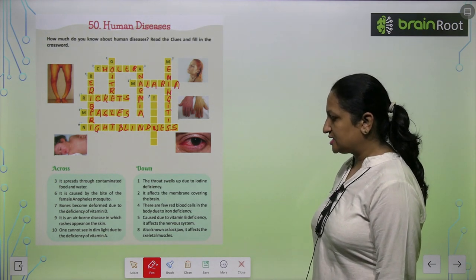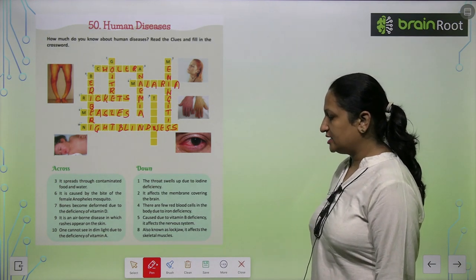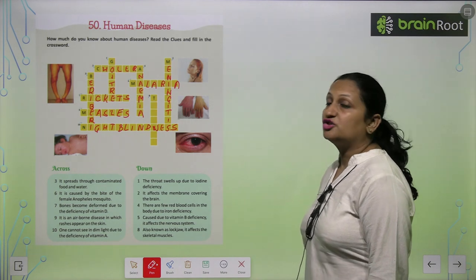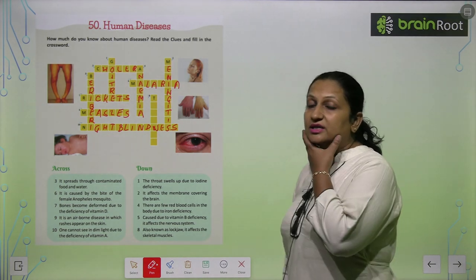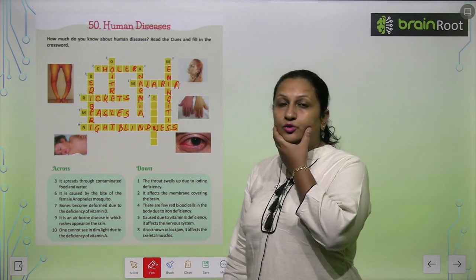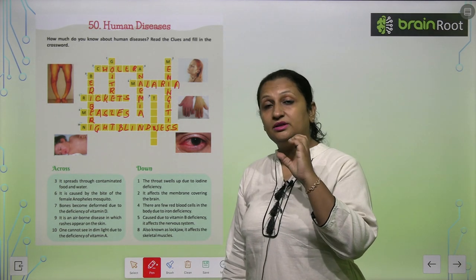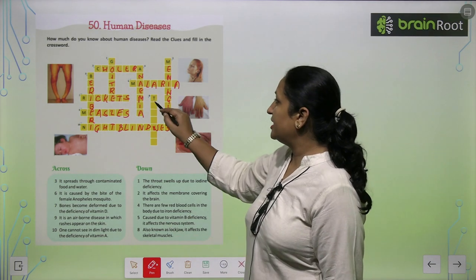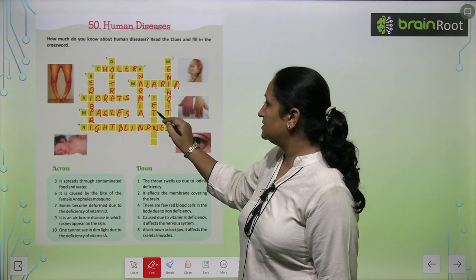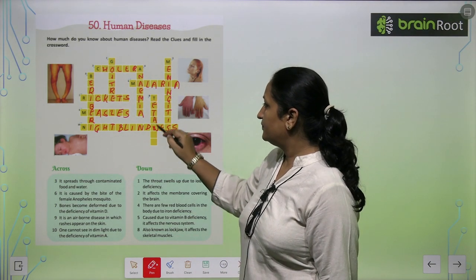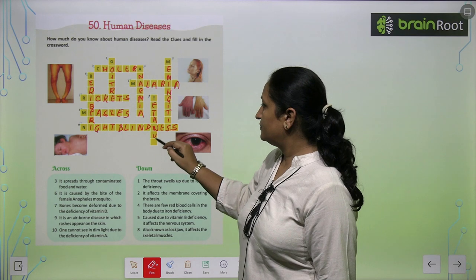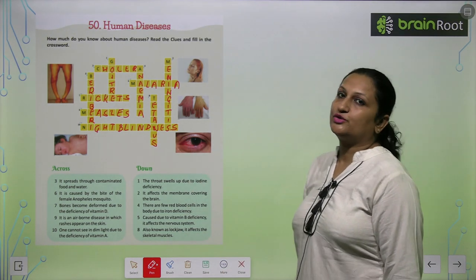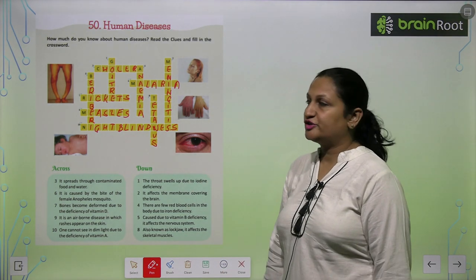Also known as lockjaw, it affects the skeletal muscles. When your skeletal muscles are affected and your mouth cannot open or close, that disease is called Tetanus. Like this, you are going to solve this crossword, children. Good.